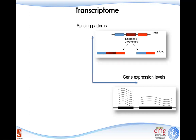The second level of information we can answer is alternative splicing. In this cartoon, you can see there are three exons in this gene. In the first condition, all three exons are in the final gene product. In the second condition, the middle exon is gone, although the gene expression level may not change, and it actually generates a very different protein. This is a very important biological question that we can answer from RNA sequencing.